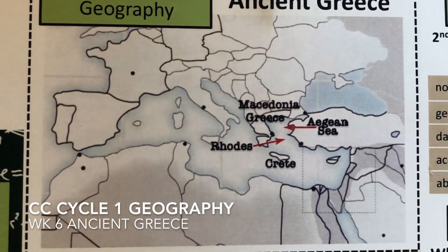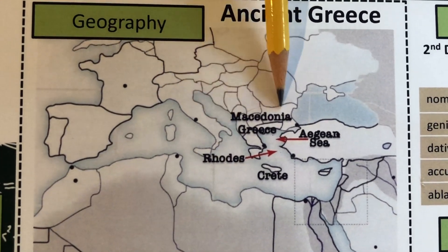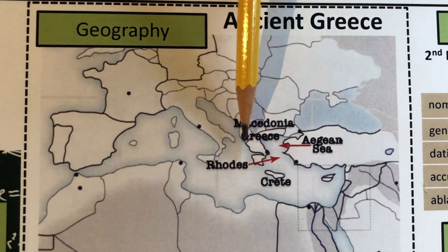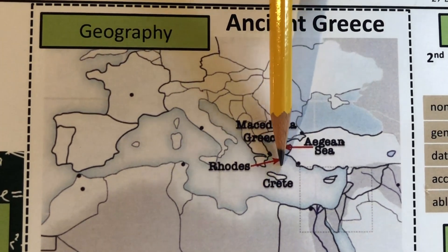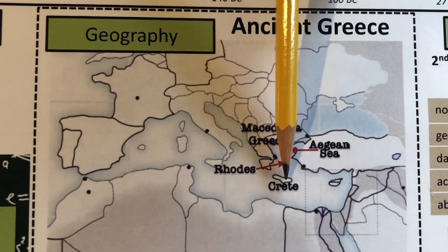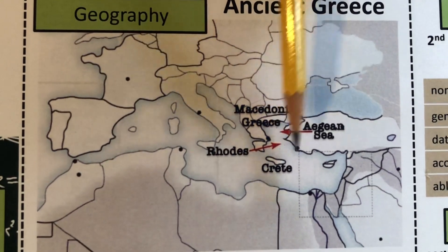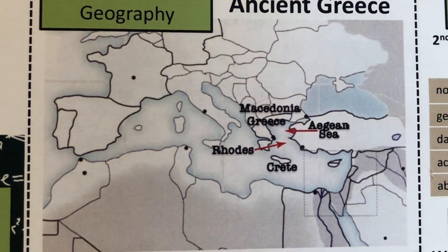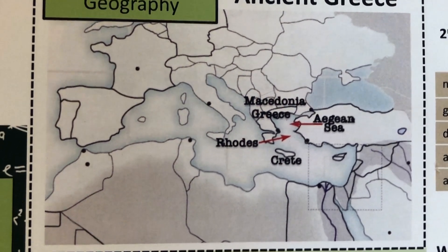Ancient Greece, Macedonia, Greece, Aegean Sea, Rhodes, Crete — all of these complete our small, small world.